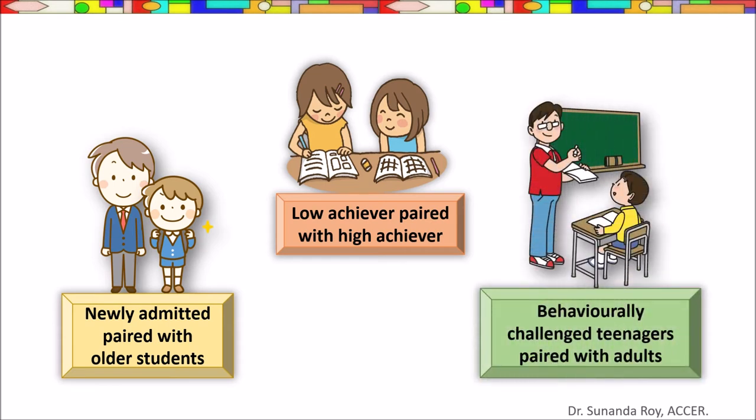Behaviorally challenged teenagers could be paired with adults. Students having behavioral problems may cause harm to their peers. Such students can be paired with school staff members. The staff member keeps a check if the student misbehaves or turns aggressive.